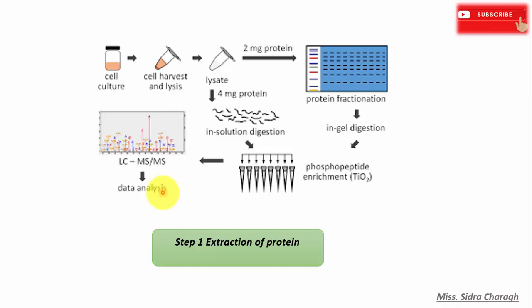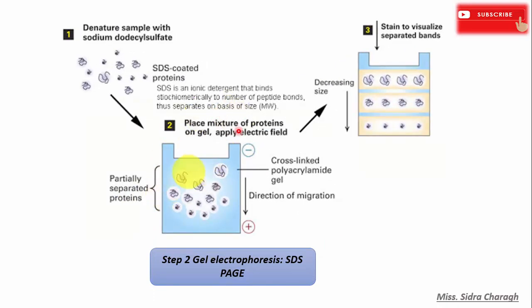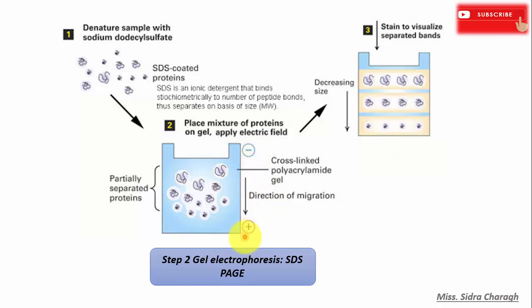When a sufficient amount of protein sample is obtained, it is diluted in loading buffer that contains a dye which helps to sink the sample in the well. A tracking dye is also used in the sample to monitor the movement of protein. After protein extraction, we perform gel electrophoresis. The sample is loaded in the well of SDS-PAGE — sodium dodecyl sulfate polyacrylamide gel electrophoresis — and proteins are separated on the basis of electric charge, isoelectric point, molecular weight, or a combination of these factors.